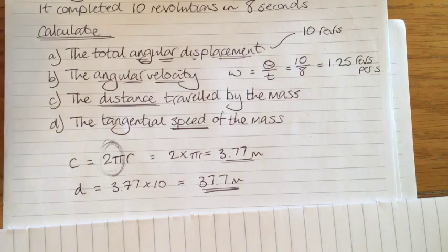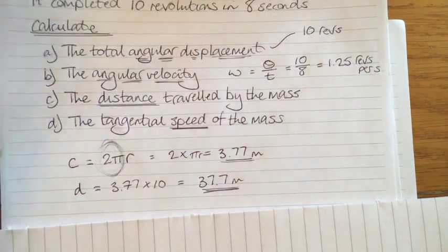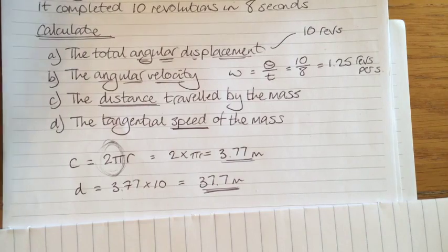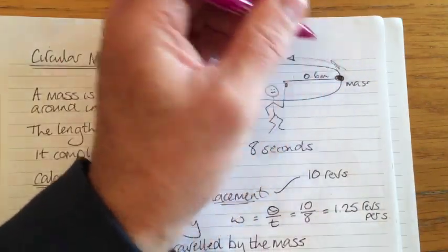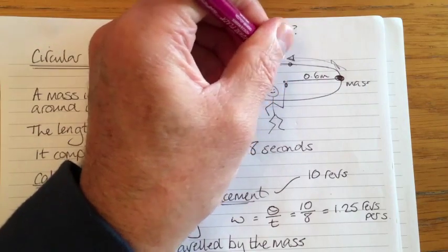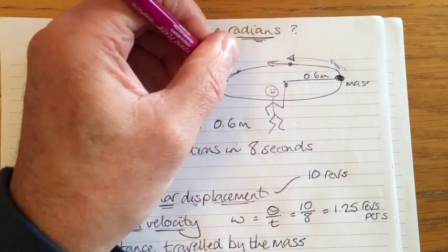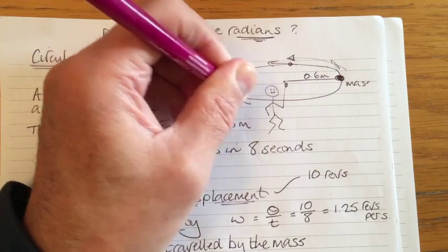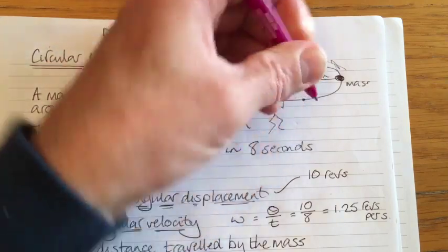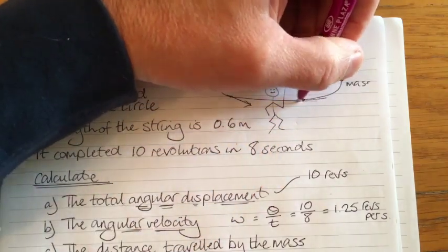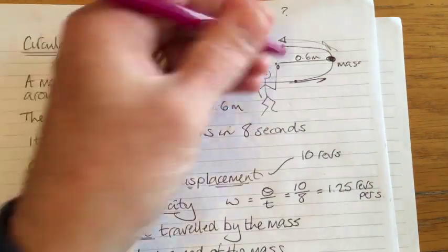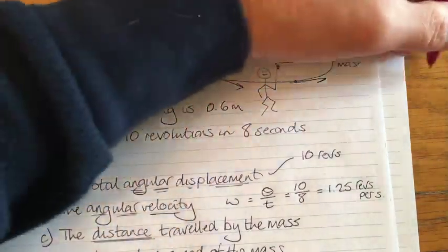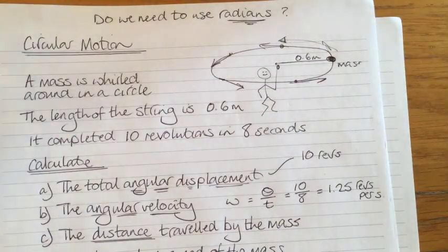Final part of the question: what is the speed of the mass? How fast is it moving? It's called tangential speed. Because that wee mass, no matter at what point you look at it — if it's round here, it's going that way; if it's here, it's going that way — it is always travelling. Its instantaneous speed is always at a tangent to the circle. If the string was to break, it would fly off in a straight line — that's Newton's first law.